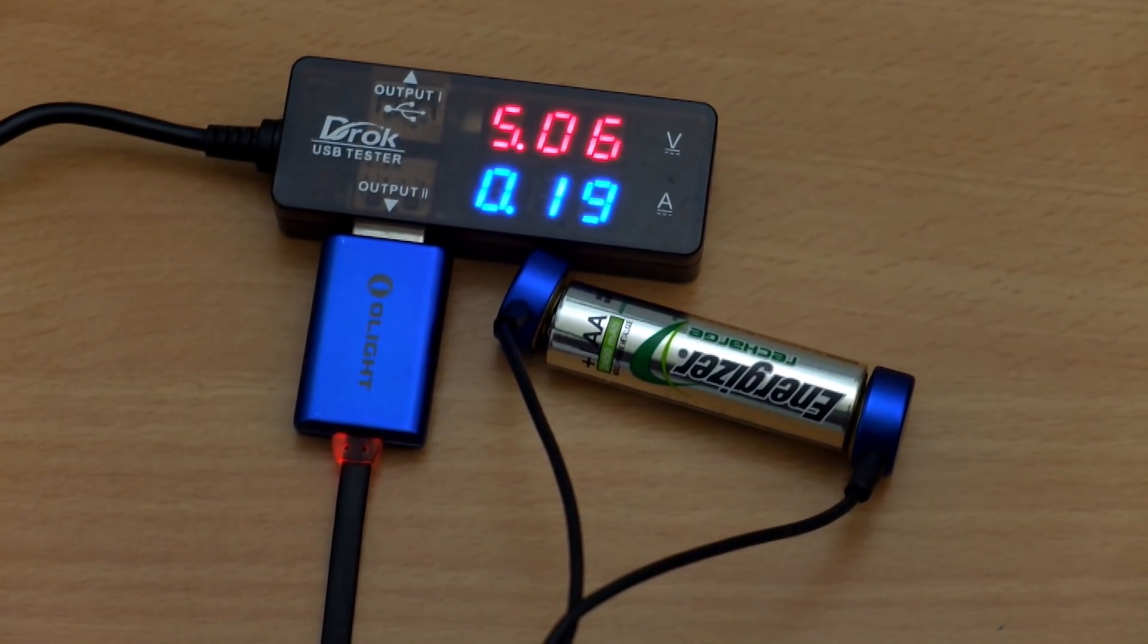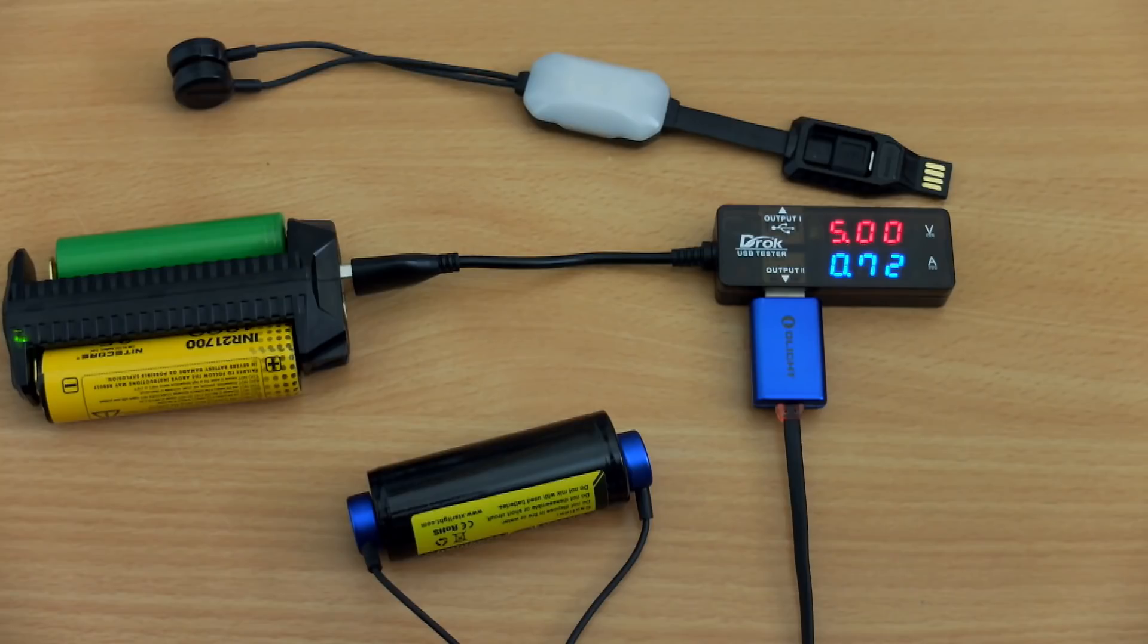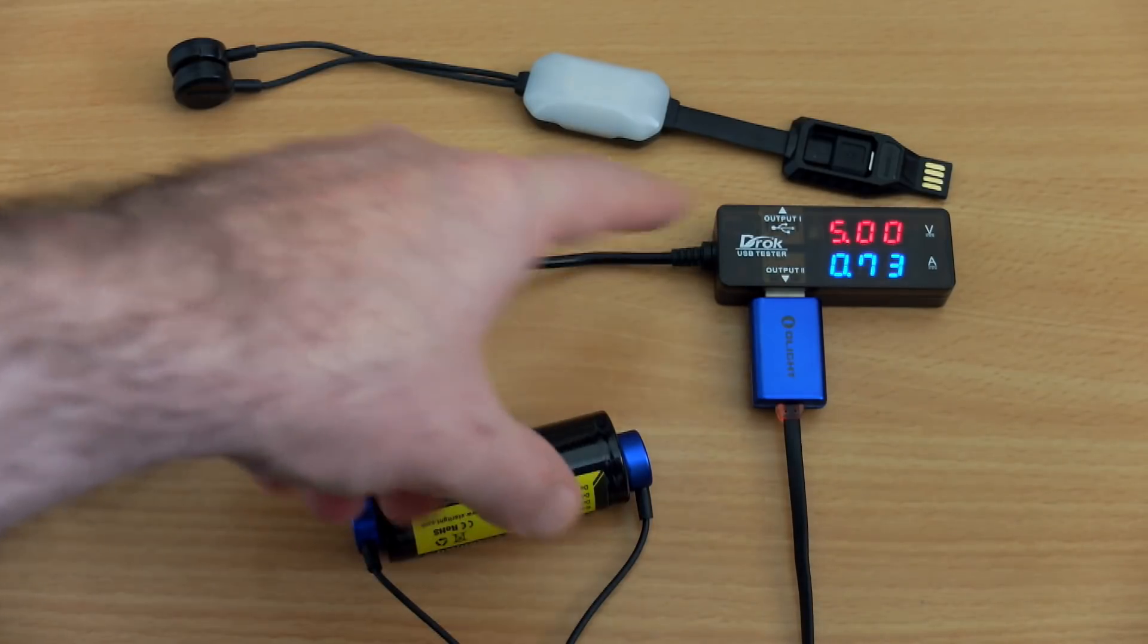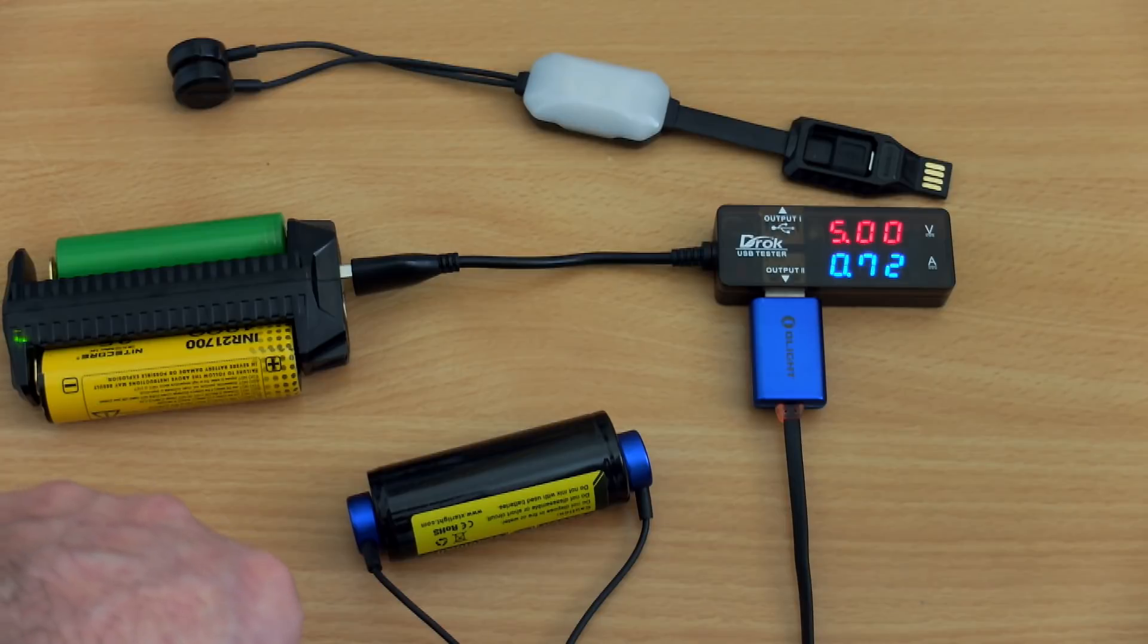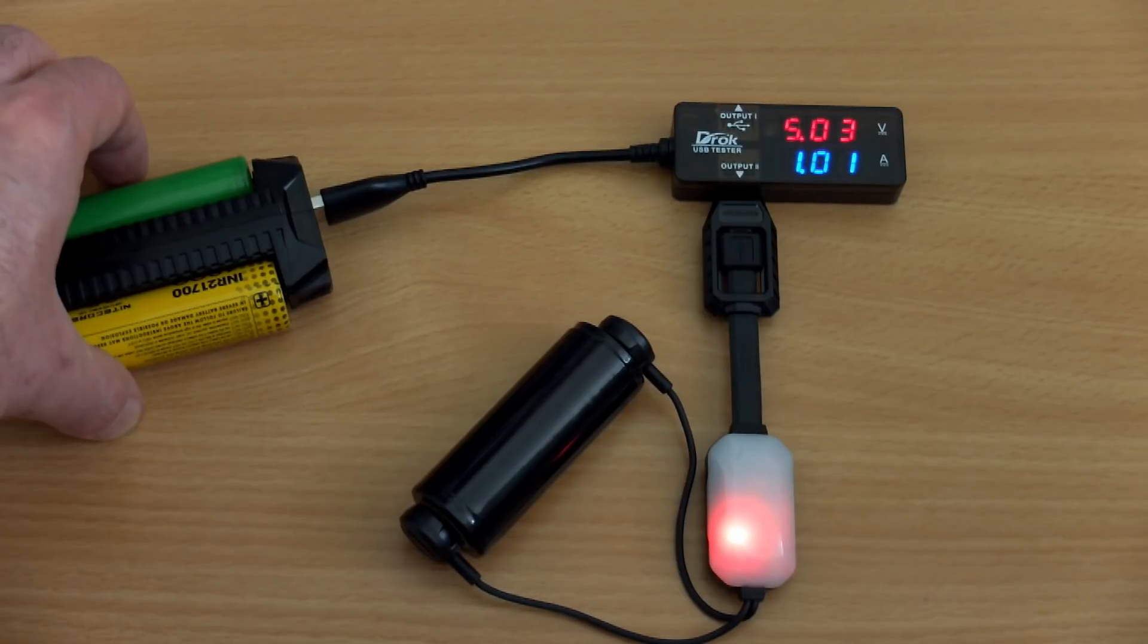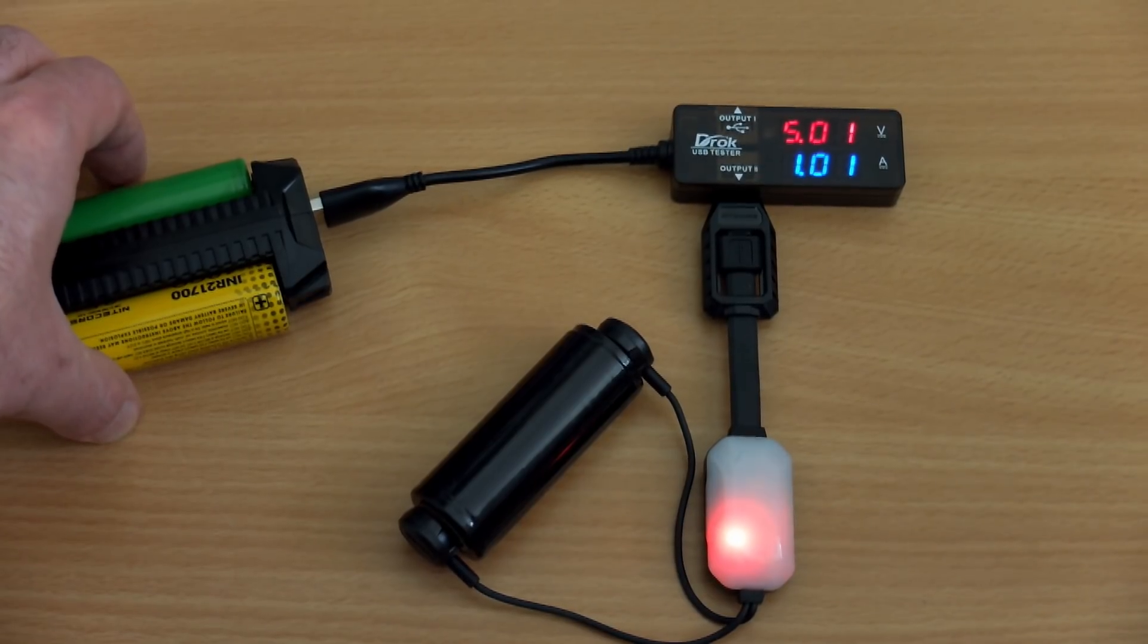Now for nickel metal hydride it charges around about 250 which isn't that fast but I do wish Nightcore had included that on this particular charger as well as the F1 and F2 because it is a useful feature to have. Saying that, the one amp charging is fine for...